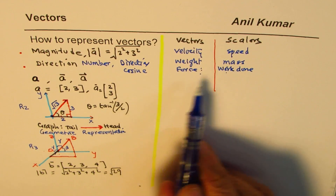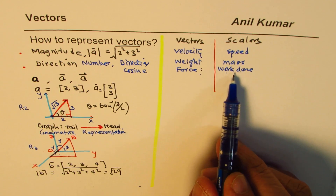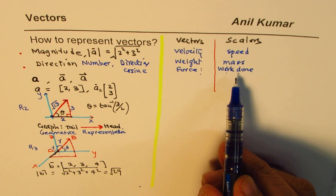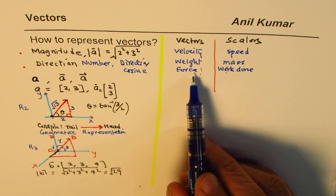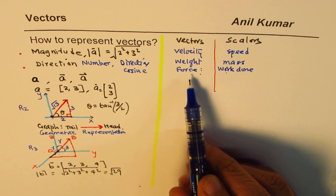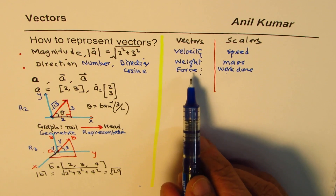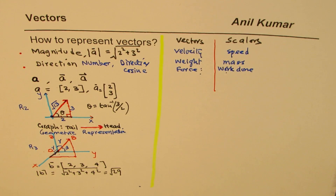Work done doesn't have a direction — you just did a certain amount of work. But force is applied in a particular direction and a body moves in that direction, so force is a vector. Likewise you could build a long list of scalars and vectors.